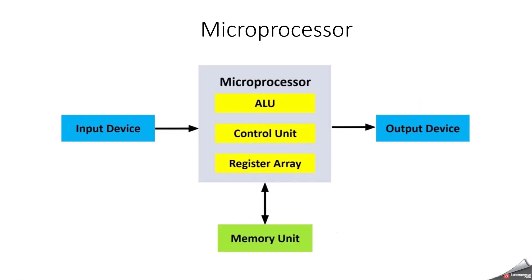What is a microprocessor? A microprocessor is a central processing unit that is designed to execute instructions and perform arithmetic and logical operations in a computer system. It is an IC that serves as the brain of a computer. Microprocessors are responsible for carrying out the instructions of a computer program by fetching, decoding, and executing them. They are commonly found in personal computers, laptops, smartphones, and various electronic devices.